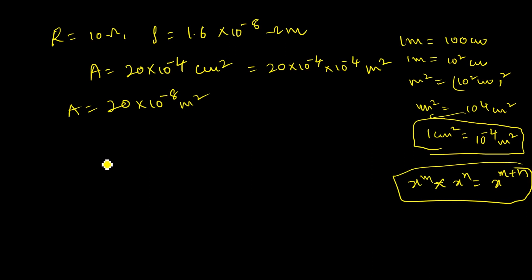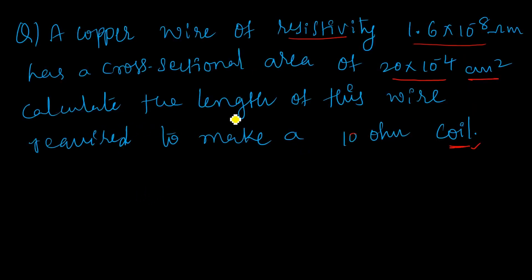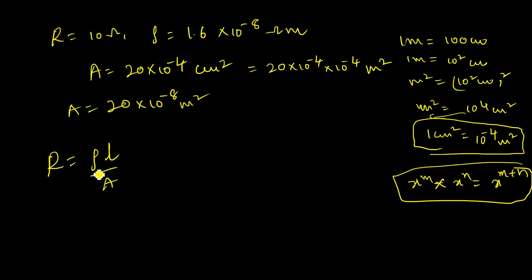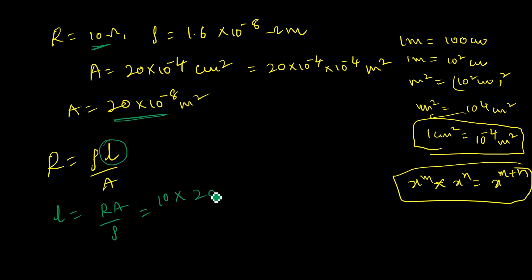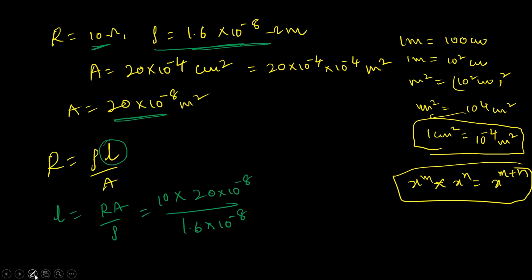The formula is R equals rho times l divided by A. We need to find the length L, so rearranging: L equals R times A divided by rho. Substituting: R is 10 ohm, A is 20×10⁻⁸ m², and rho is 1.6×10⁻⁸ ohm·meter. The 10⁻⁸ terms cancel.